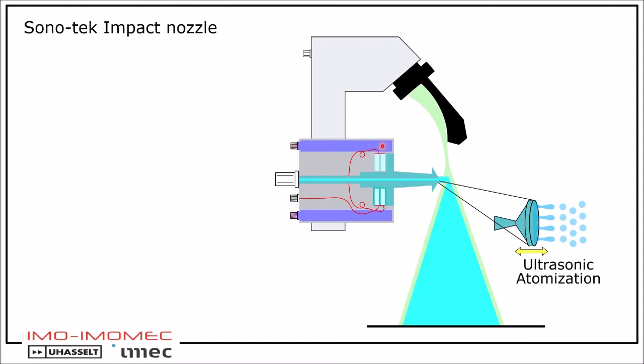The applied electrical signal with a given frequency will result in mechanical vibrations of the nozzle tip. This nozzle tip will vibrate at 120 kHz in our case. These vibrations will induce standing waves in the liquid on the nozzle tip. If the standing waves are high enough, small droplets will split off.